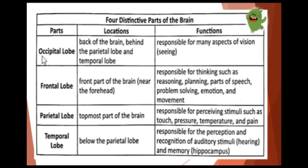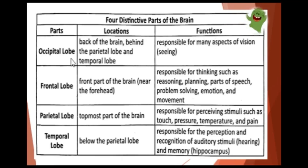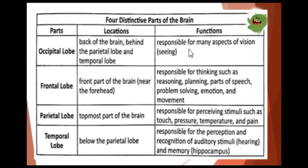The four parts of the brain are: the occipital lobe, frontal lobe, parietal lobe, and temporal lobe. We will cover the locations and functions of each part. For the occipital lobe, the location is the back of the brain, behind the parietal lobe and temporal lobe. Its function is responsible for many aspects of vision, like seeing.